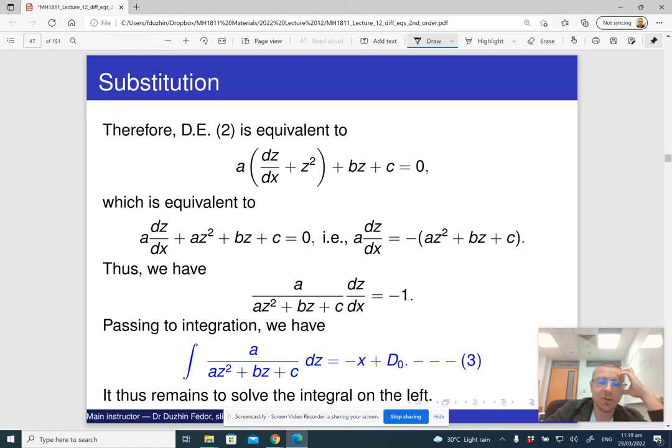Well, with the integral on the left, notice that the denominator of that integral is just the same quadratic form as the characteristic equation. Compare it to the characteristic equation: a lambda squared plus b lambda plus c. Now, the only difference is that we replaced lambda with z. But essentially, the denominator of this thing is our characteristic equation.